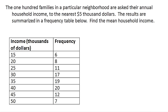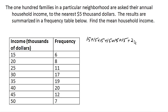To do this, we're going to need to find the sum of these scores, which means I'm going to have to imagine adding 15 six times, because this is telling me that I have six 15s. And then I'm going to have to add 20 eight times, and so on and so forth for each of the other scores.